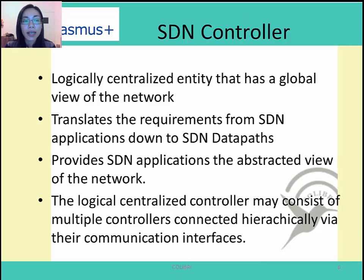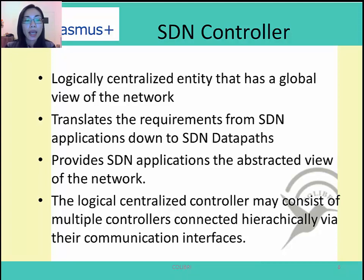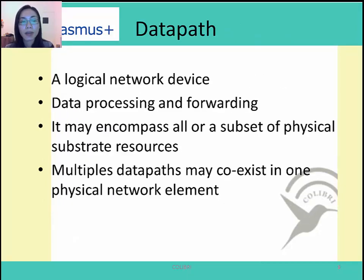The SDN controller is a logically centralized entity that has an abstracted global view of the whole network. It provides this information to the applications and translates the requirements of the application to the network devices of the data plane. The logical controller can comprise multiple physical controllers connected via their communication interfaces. The data path is a logical network device which has forwarding and data processing capabilities, communicating with the controller via the southbound interface. A data path may be contained in a single network element or may be defined across multiple physical network elements.